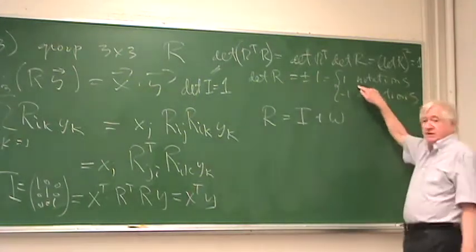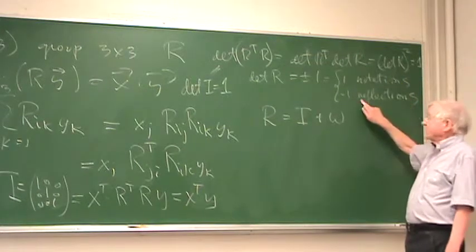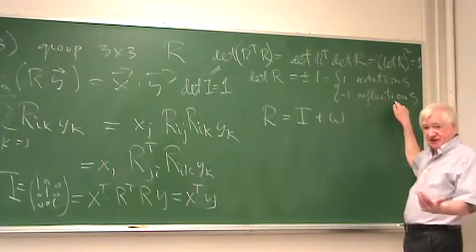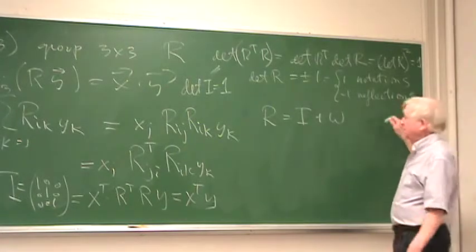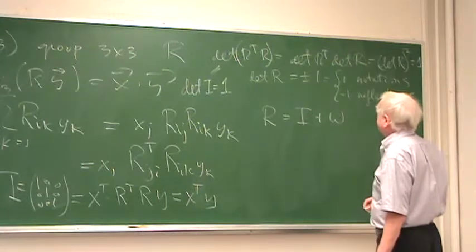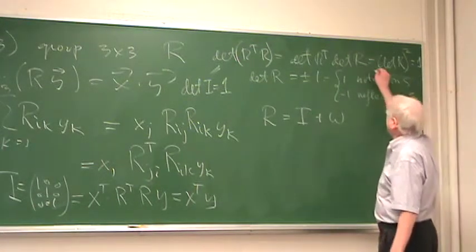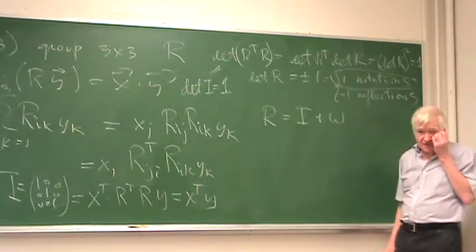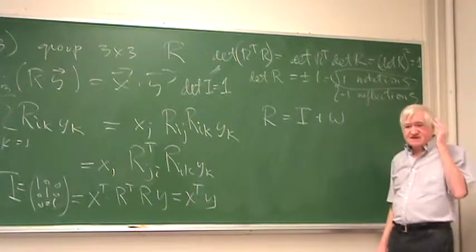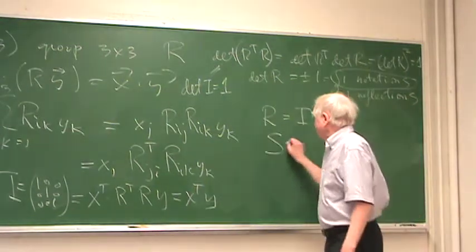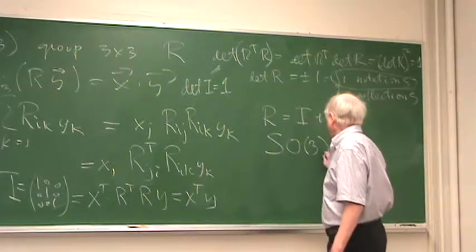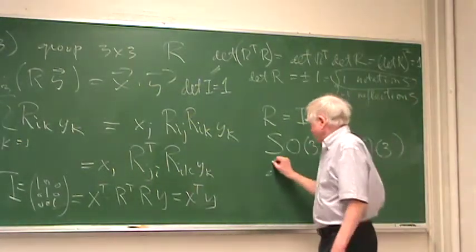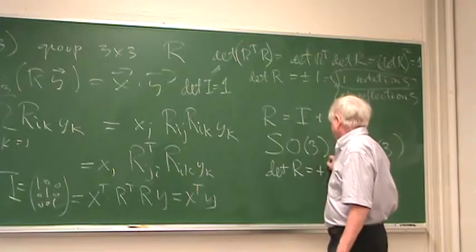If it's plus one, we're talking about a rotation. Minus one, we're talking about a reflection. This set here, the ones that have determinant one, they form a subgroup of O3, and that subgroup is called SO3, and it's contained in O3. These are the ones such that determinant of R is plus one.